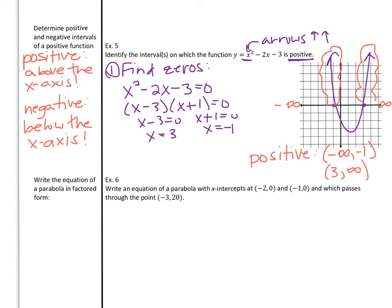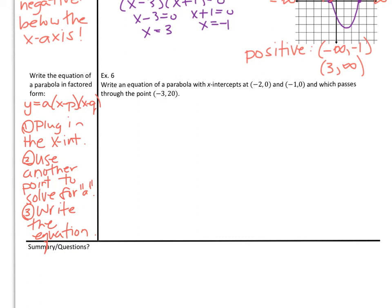Our final process: write the equation of a parabola in factored form. The template is y equals a times x minus p times x minus q. If you're asked to write an equation in factored form, you should be given the x-intercepts for the function — plug those in first for p and q. Then you'll need another point either on the graph or in the given information to solve for a by plugging those numbers in for x and y. Once you have your a value, write your equation.